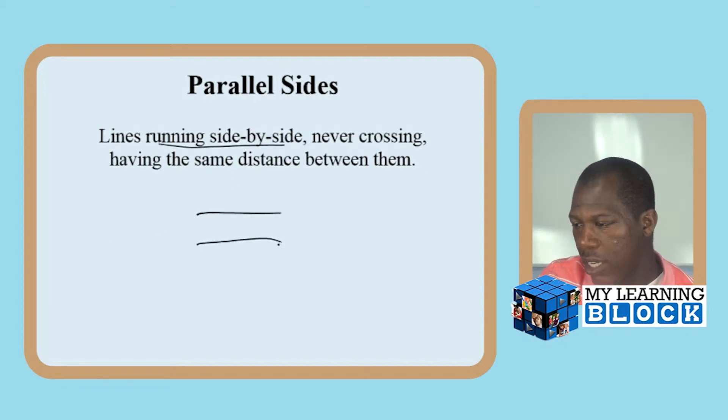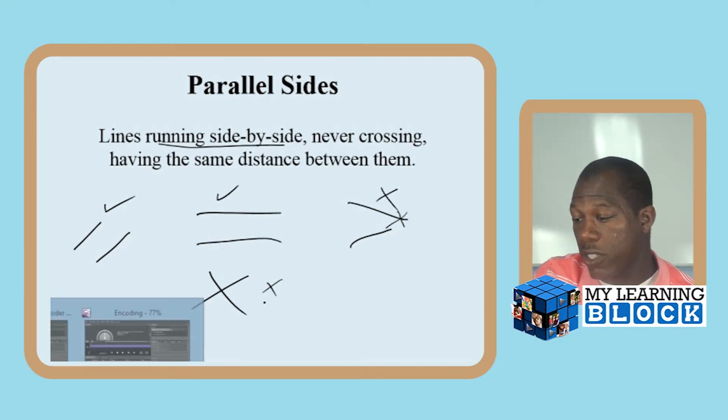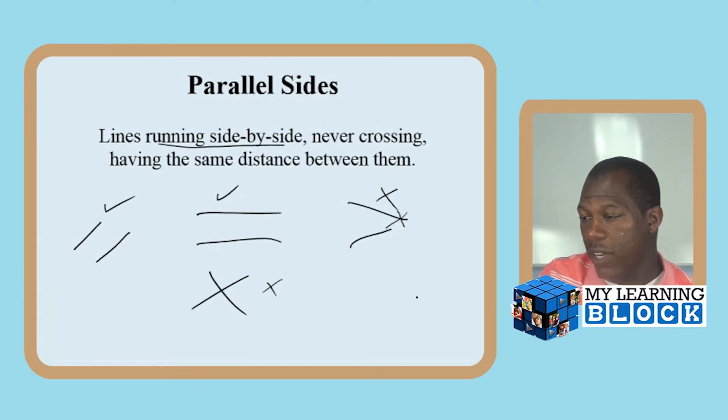All right. So these are, if this line was straight and perfect, these would be parallel lines. These are not. Sooner or later, they're going to intersect about right here. Another way, these are parallel. These are not. An X is definitely not parallel because they intersect. And if it intersects, then it is not a parallel side.